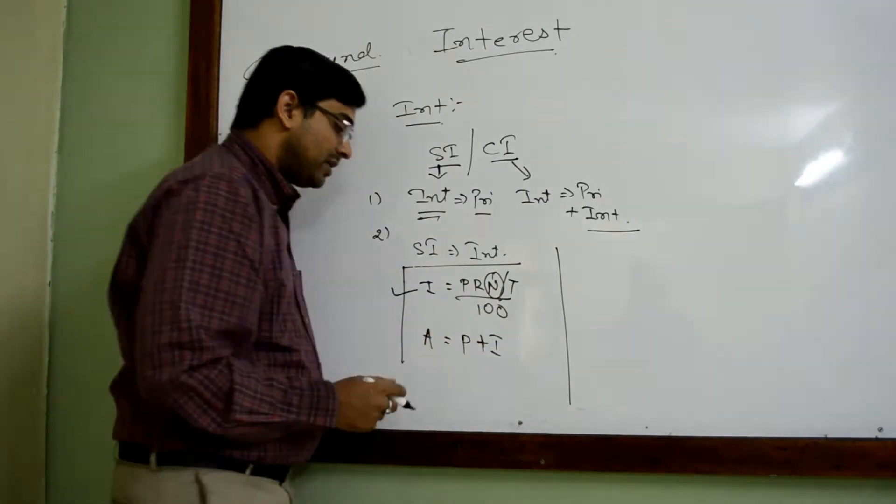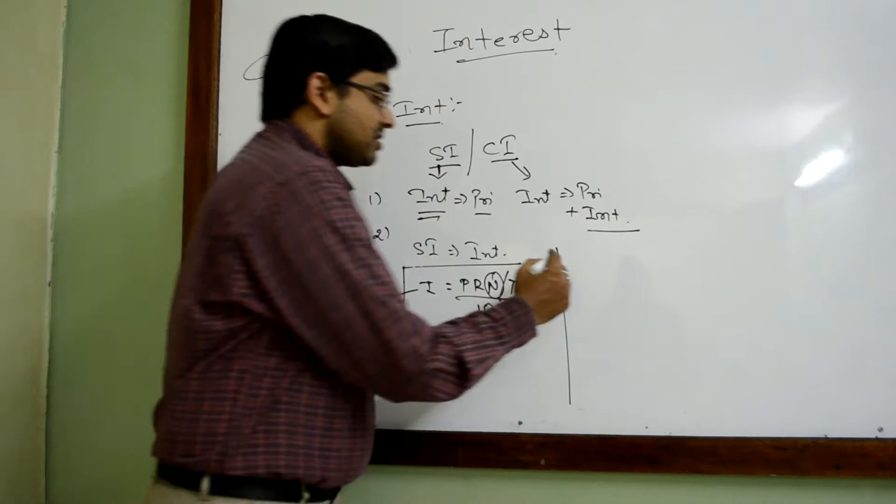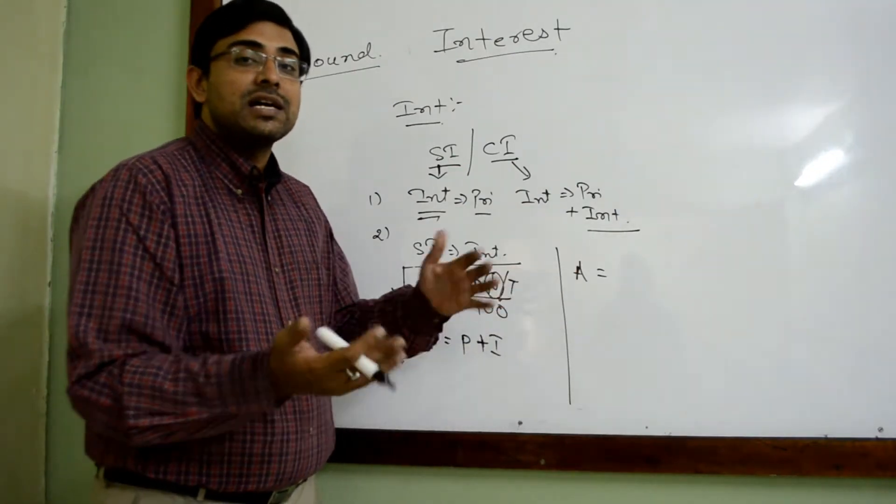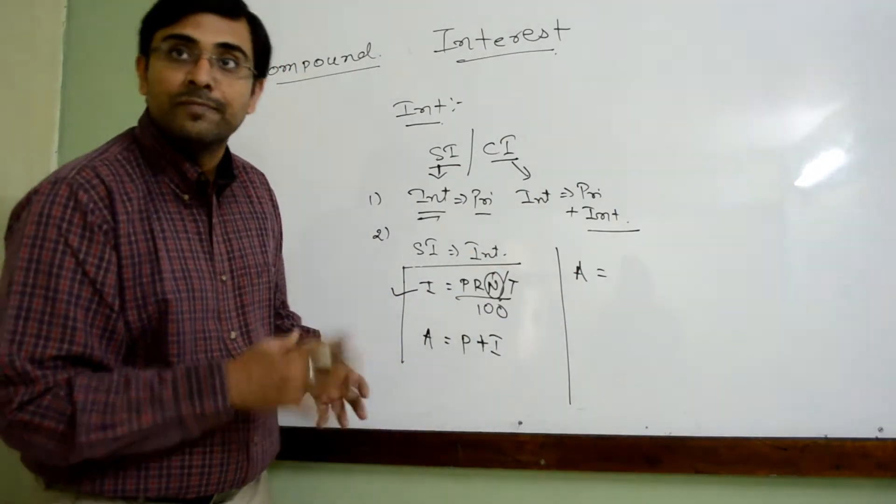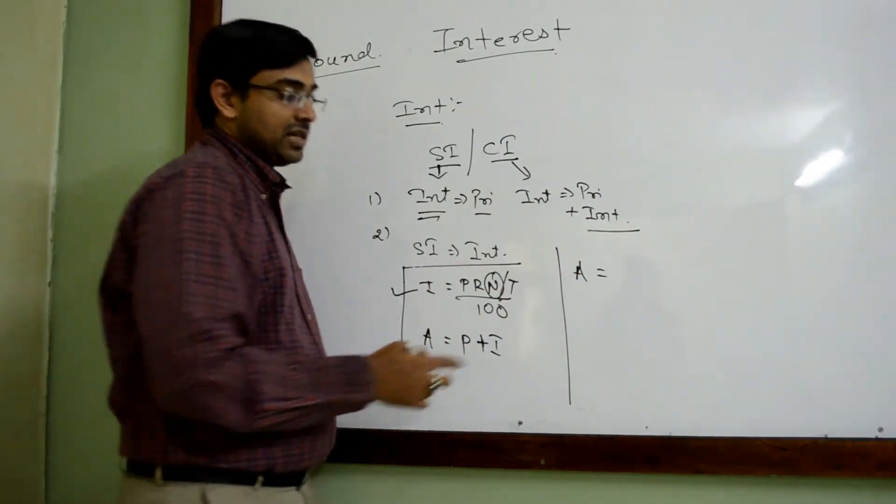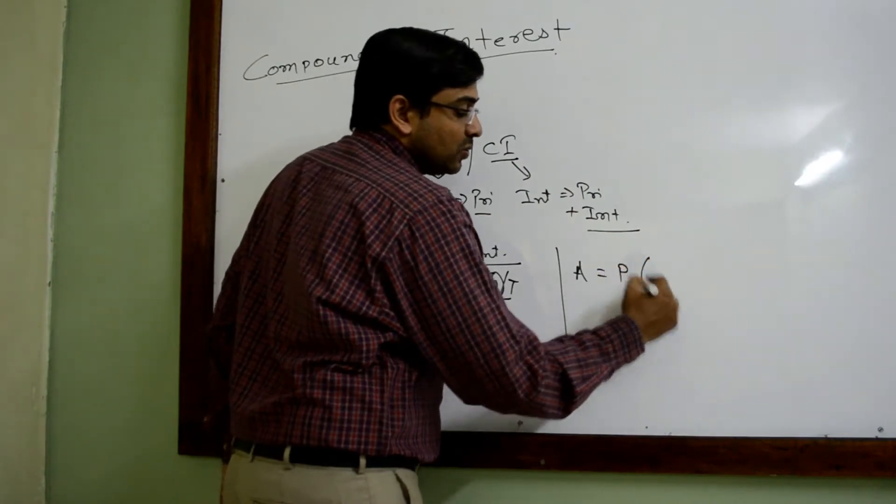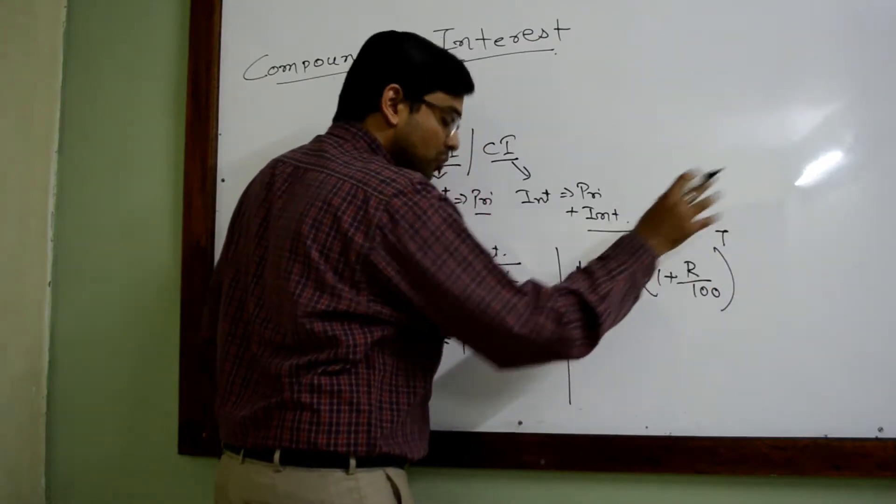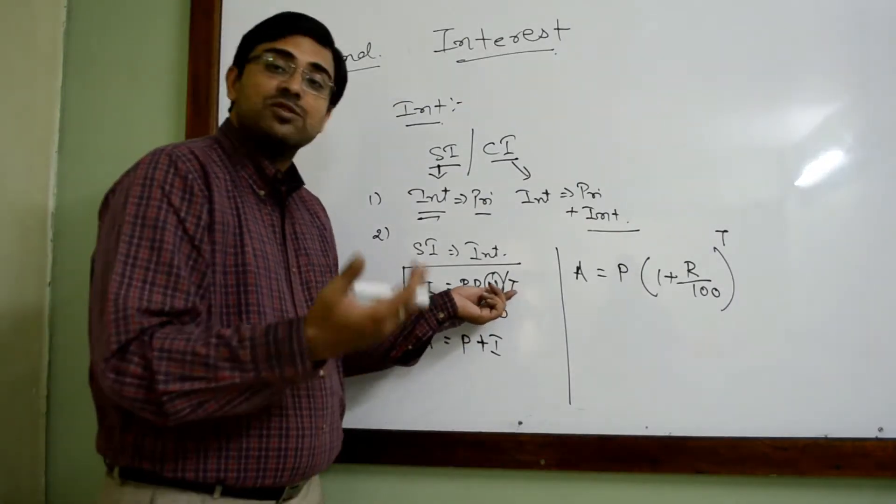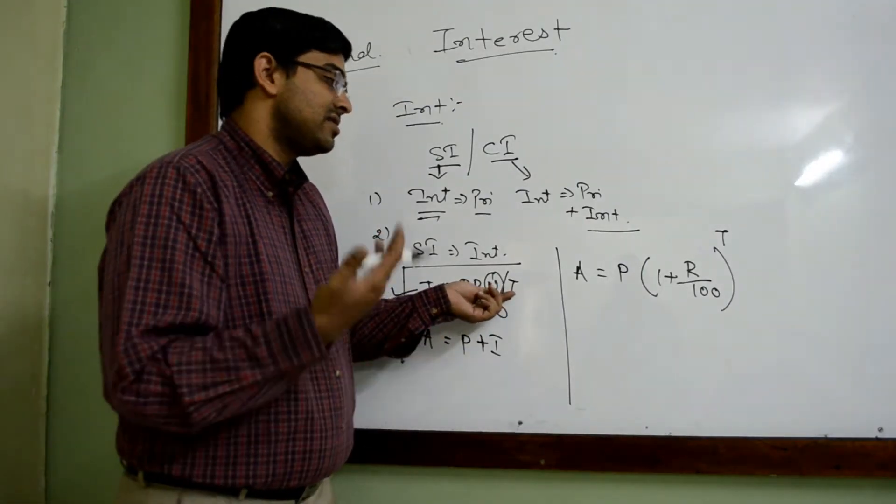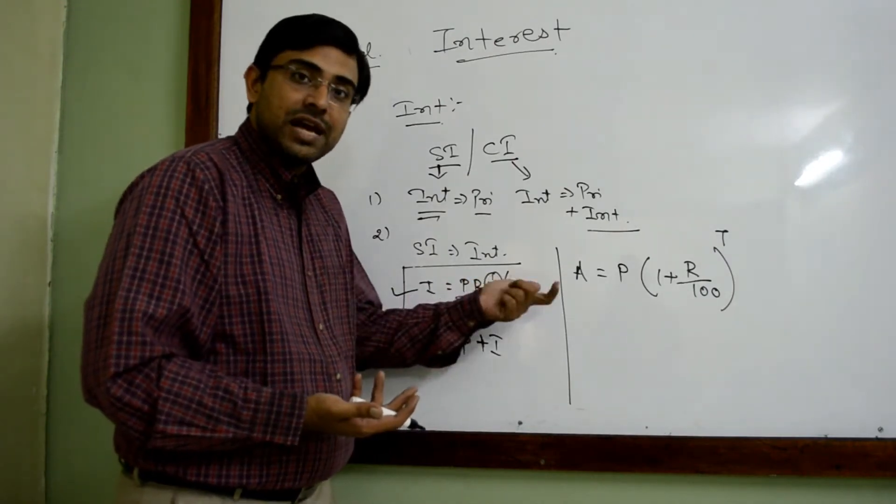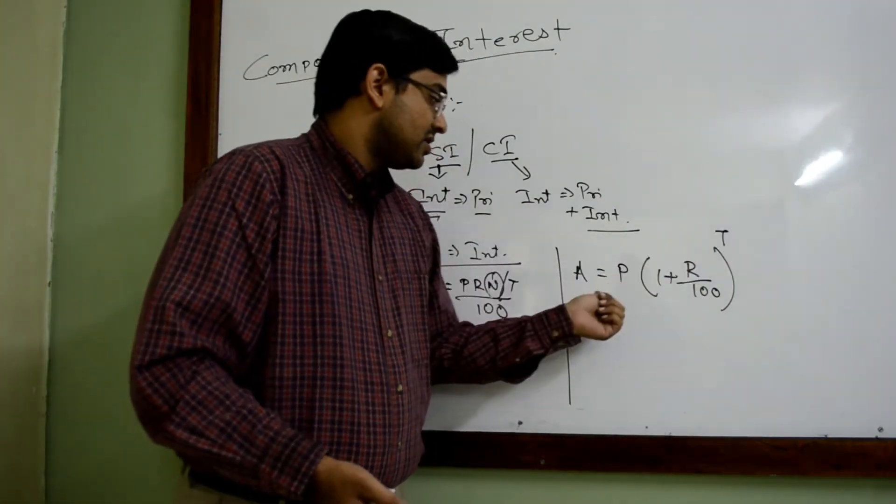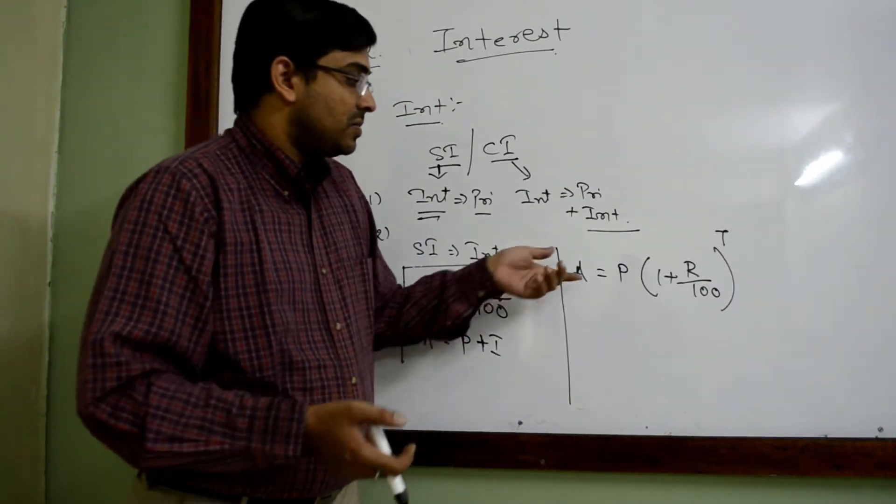Simple interest is interest dominated. Compound interest is actually not interest dominated, rather it is amount dominated. Here, interest find out is not a direct formula. The formula we have to find out is amount. So A equals P into 1 plus R by 100 to the power T, or to power N. Based on the books, based on the authors, based on the classes, they use different notations. P is principal, R is rate of interest, T is time. This is the formula for compound interest.